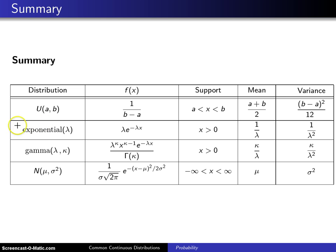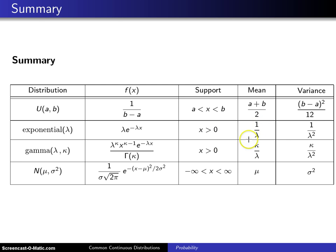The second distribution is the exponential distribution. It has a single parameter lambda, which is usually called a rate parameter, and it has a positive support with tractable mean and variance.